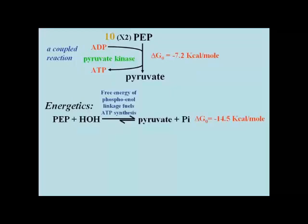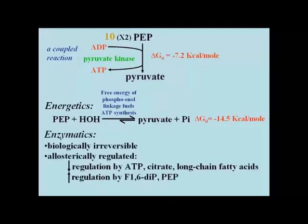In energetic terms, the large amount of free energy released by the hydrolysis of the phosphoenol linkage in PEP is what drives the endergonic ATP synthesis. Again, demonstrate this to yourself by writing the overall reaction as the sum of two separate reactions. Pyruvate kinase catalyzes a biologically irreversible reaction, and the enzyme is allosterically regulated.